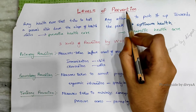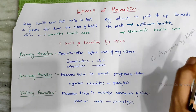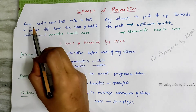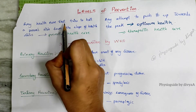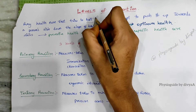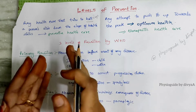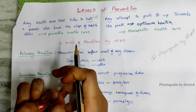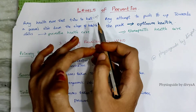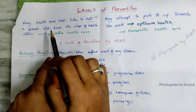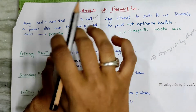This is the first phase where the disease is prevented from occurring. There are two types: preventive health care and therapeutic health care. Preventive health care means any health care that tries to stop a person sliding down the slope of health status — that is, before the disease occurs, we prevent the person from being attacked by it.